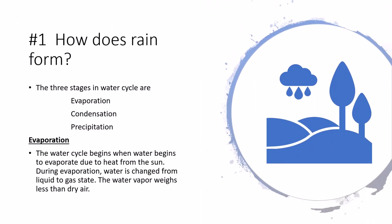The three stages in the water cycle are evaporation, condensation, and precipitation. The water cycle begins when water begins to evaporate due to heat from the sun. During evaporation, water is changed from a liquid to a gaseous state.